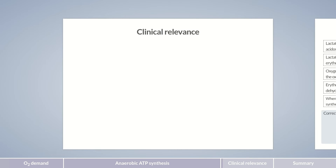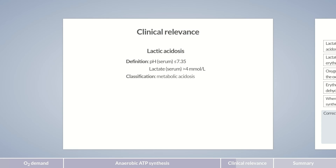Lactate metabolism has important clinical implications. As already mentioned, lactate production leads to a decrease in pH. In severe cases, lactic acidosis can occur. As a result, the serum pH drops below 7.35, while lactate levels increase above 4 millimoles per liter. Lactic acidosis belongs to the metabolic acidosis group and requires urgent treatment. Although it occurs rarely, it's often fatal, as a pH below 7 is incompatible with life.